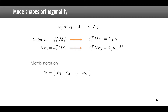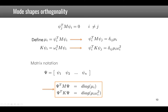Using matrix notation, we define the matrix of mode shapes capital Psi by placing each mode shape as a column in an n-by-n matrix. The product Psi-transpose M Psi gives a diagonal matrix with modal masses on the diagonal, and for K it gives modal masses multiplied by omega_i-squared.